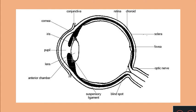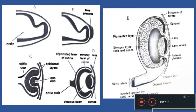When the iris contracts, the pupil will be reduced, and when it relaxes, the pupil will be enlarged, and this regulates the entry of light into the eye. The optic cup has two walls: the outer wall of the optic cup is called as the pigmented layer, and the inner wall of the optic cup is called as the sensory layer, which will give rise to the retina.